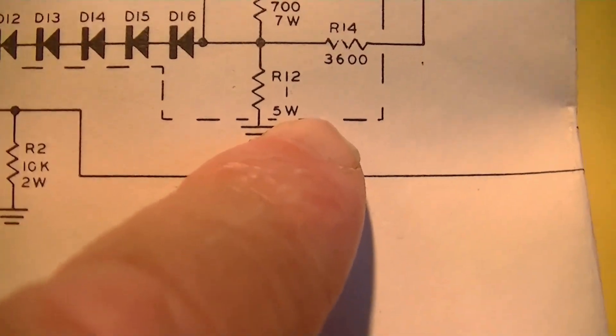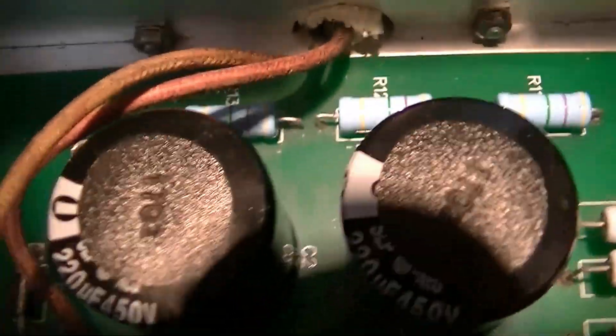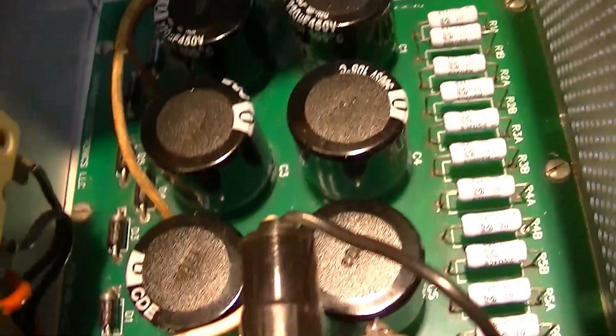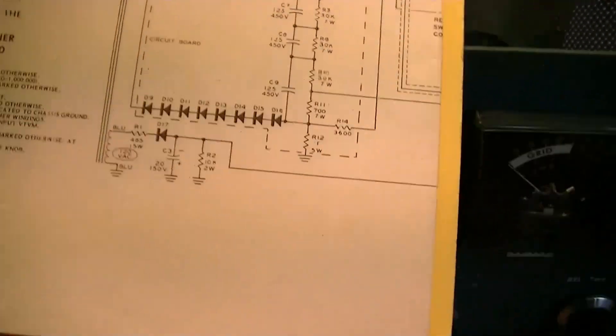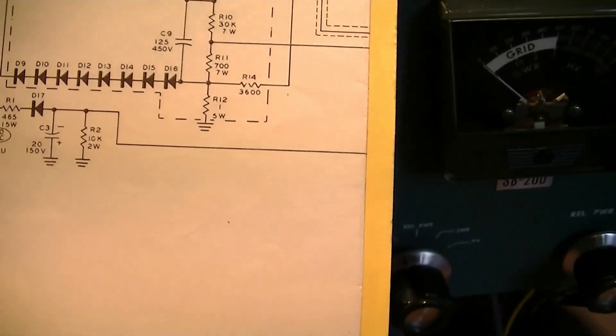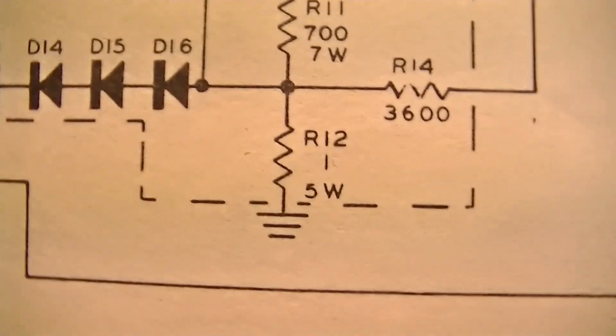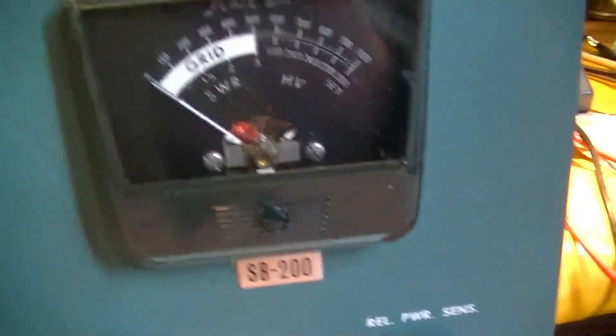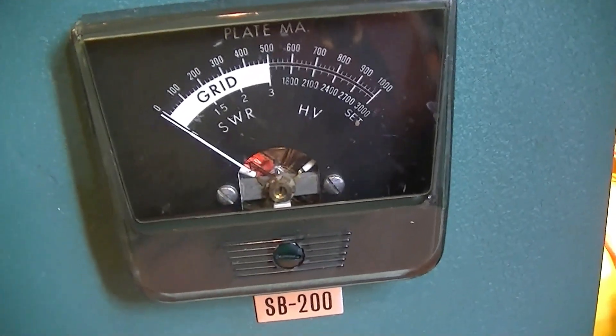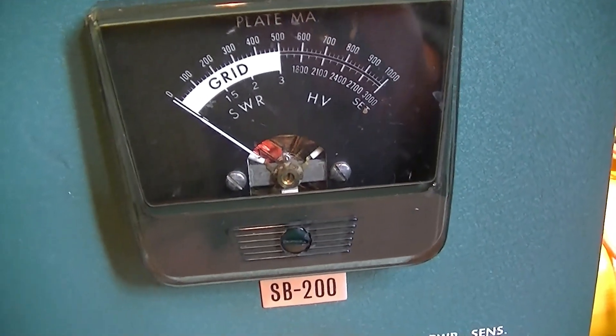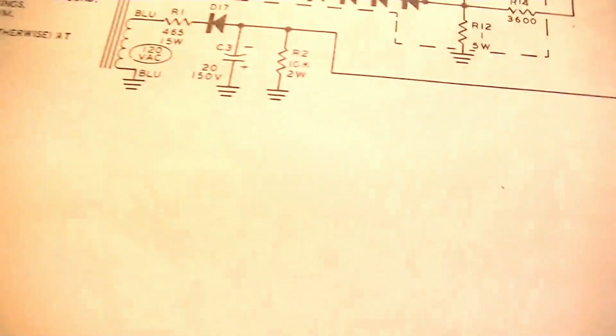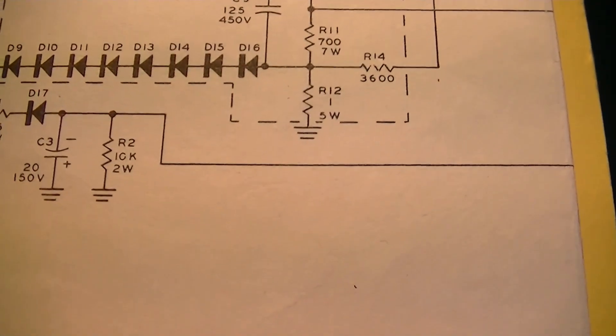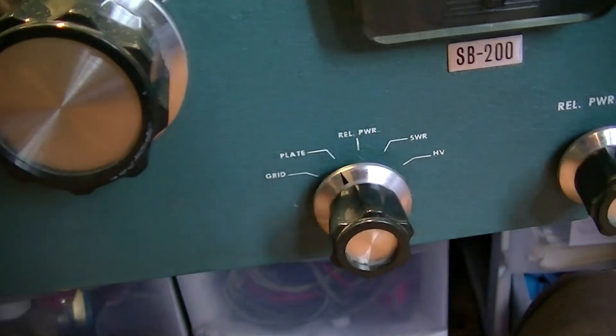Here is a 1 ohm 5 watt resistor, they call it R12. Here's R12 up here which is about 40 megs. I've got to get the schematic for the Harbach board, but clearly that's part of this voltage divider here which measures the plate current. The plate current is always reading 600-800 mils when there's no load on it. So I think we've found one problem at least. I've got to find a 1 ohm resistor that's 5, 7, 10 watts to put in there.